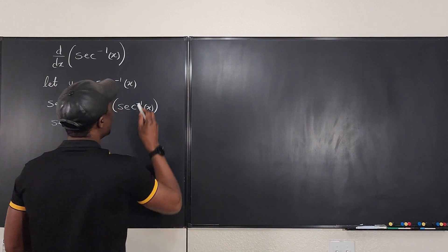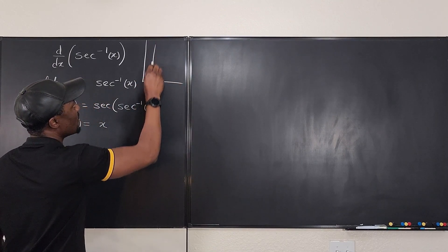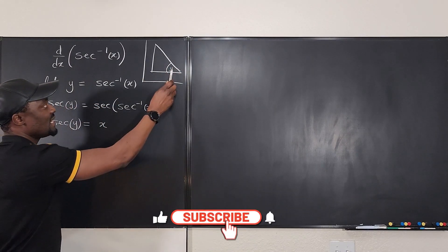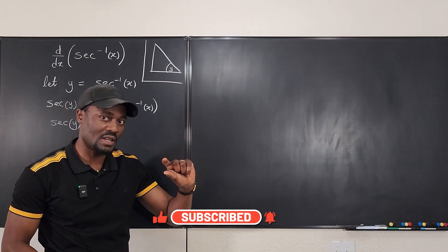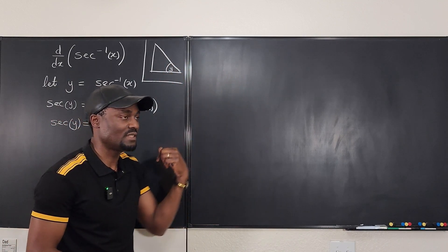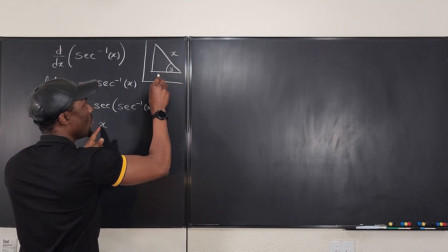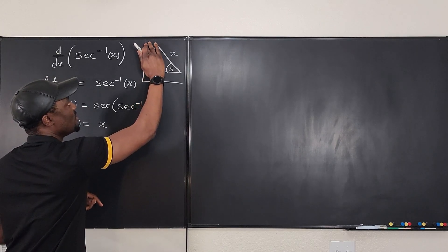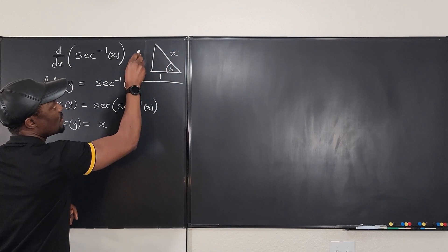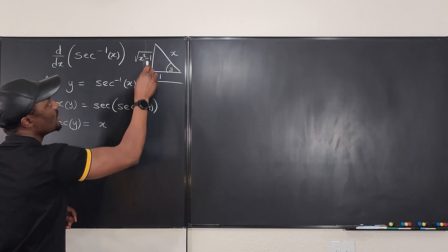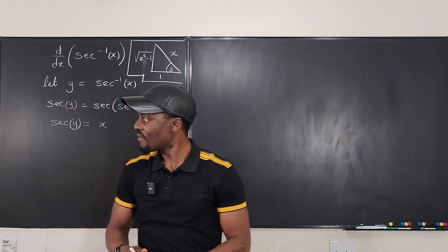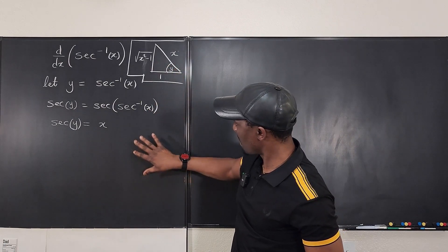When we say secant y equals x, we mean if you take the secant of this angle y, you get x over one — which is just x. Let's draw our triangle with angle y. Secant is one over cosine, and cosine is adjacent over hypotenuse, so secant is hypotenuse over adjacent. So x over 1 means hypotenuse is x and adjacent is 1. The third side is the square root of x squared minus one.